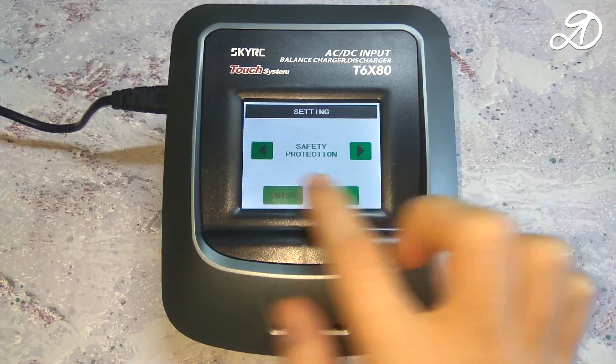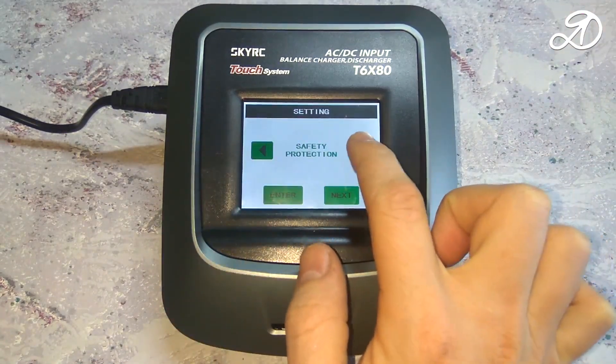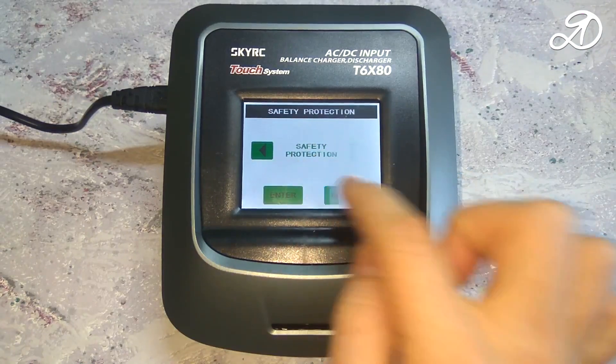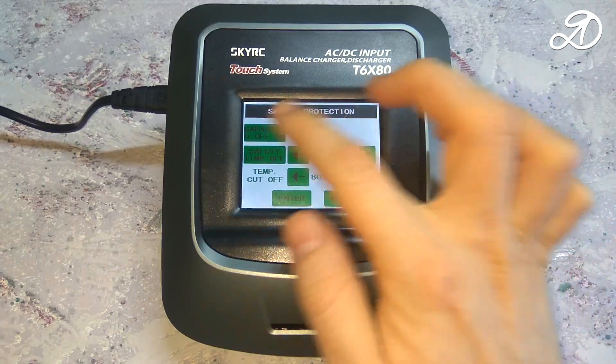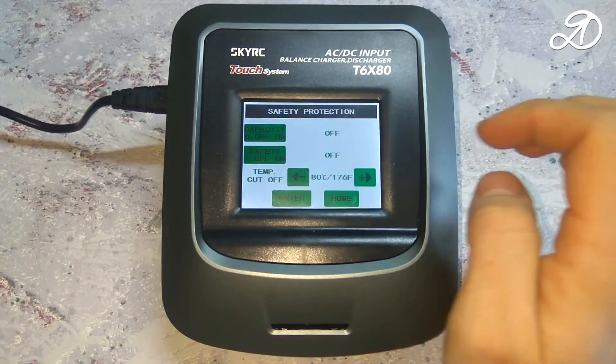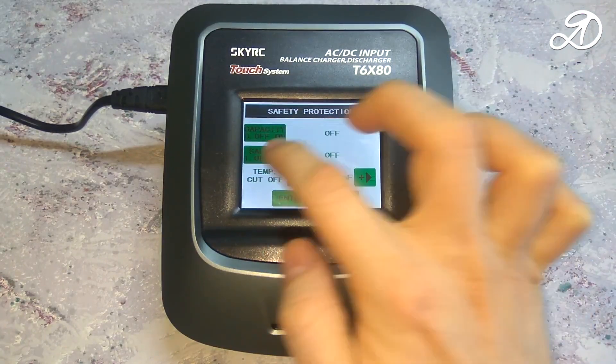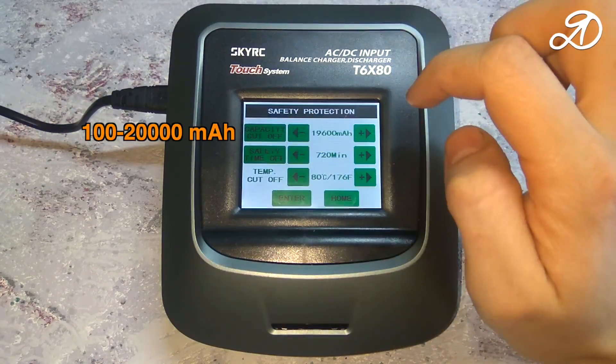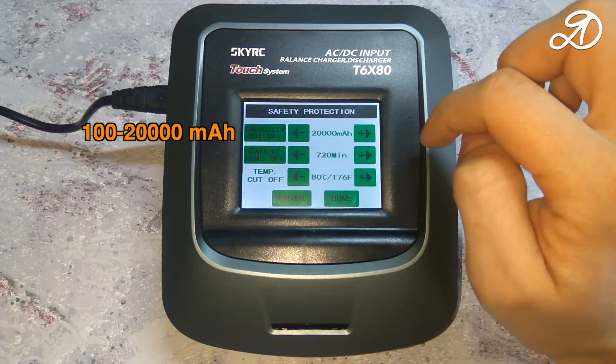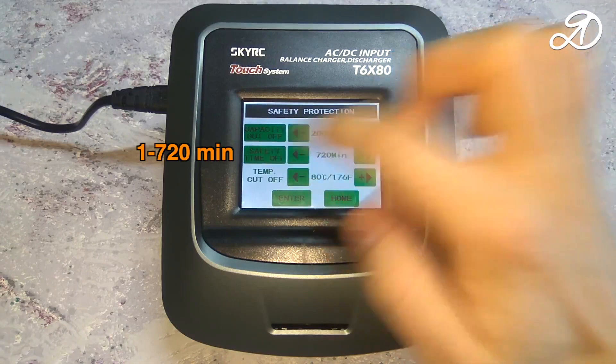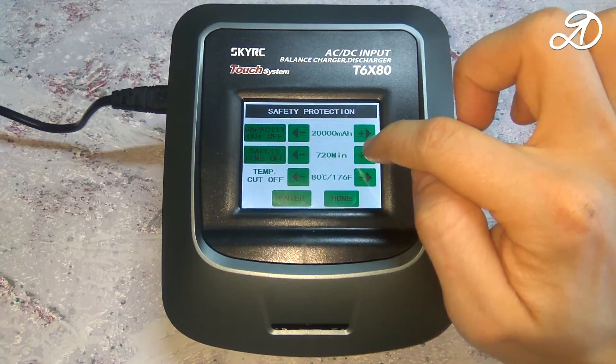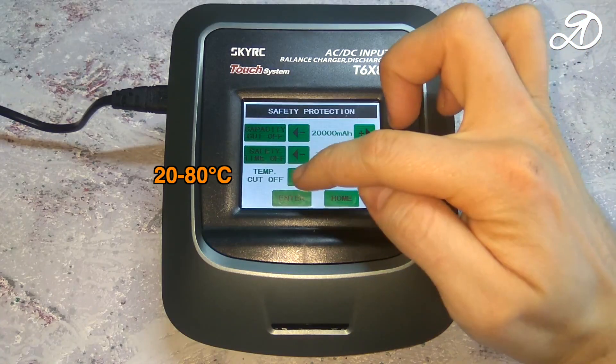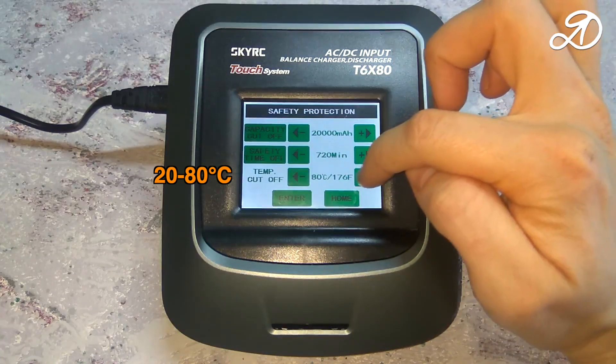You can set the protection mode in the settings: maximum capacity protection, time protection, and temperature protection. Temperature protection requires an external temperature sensor.